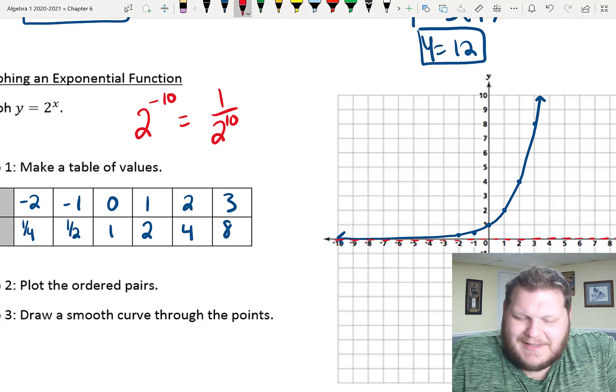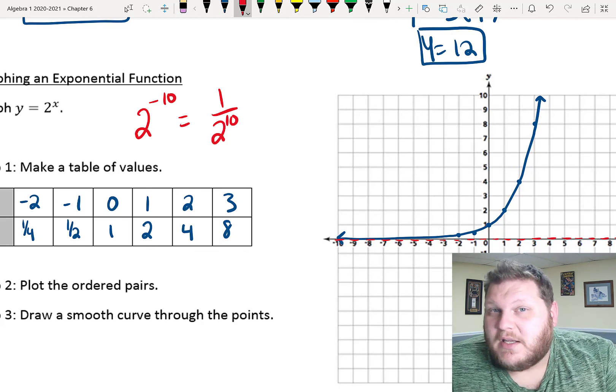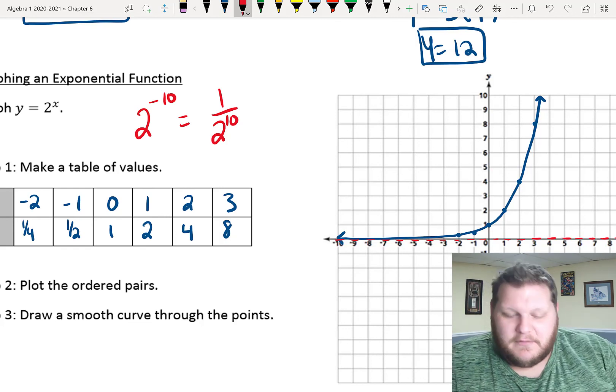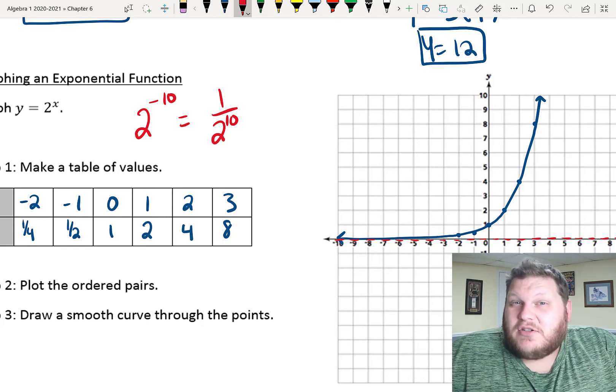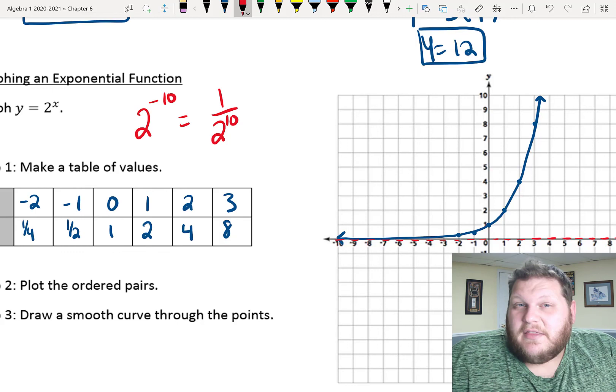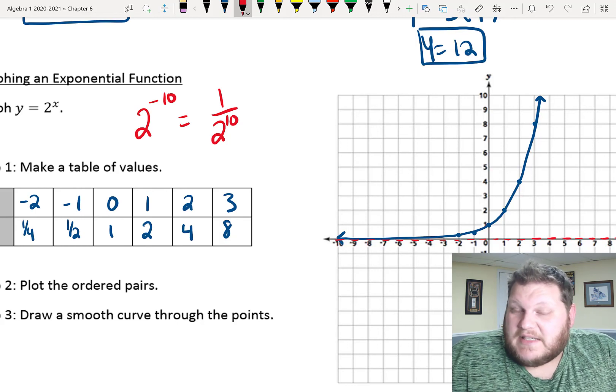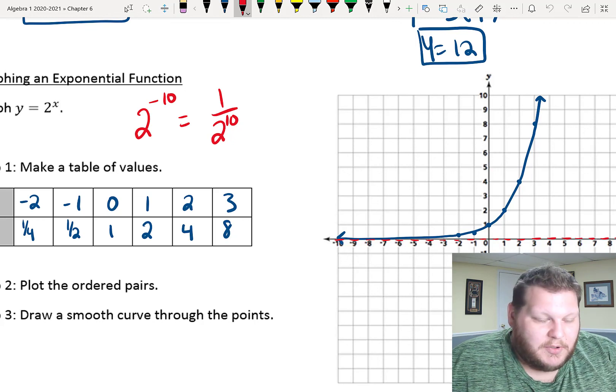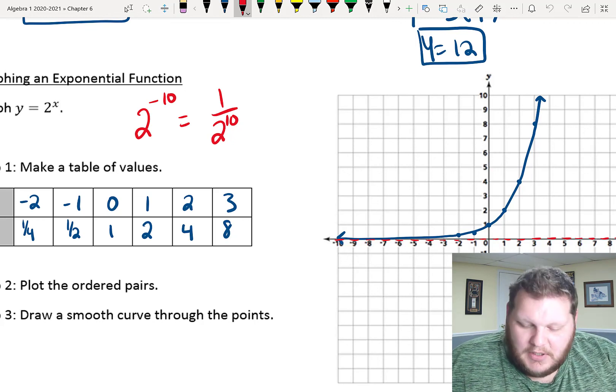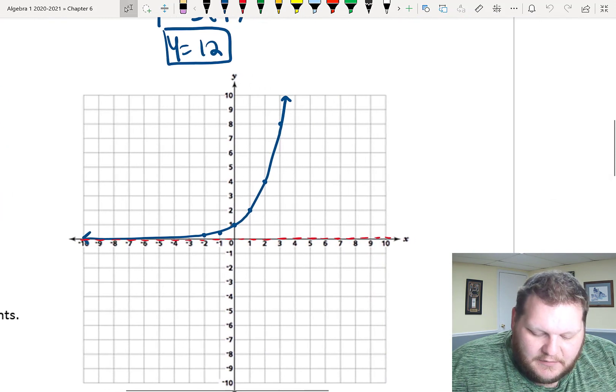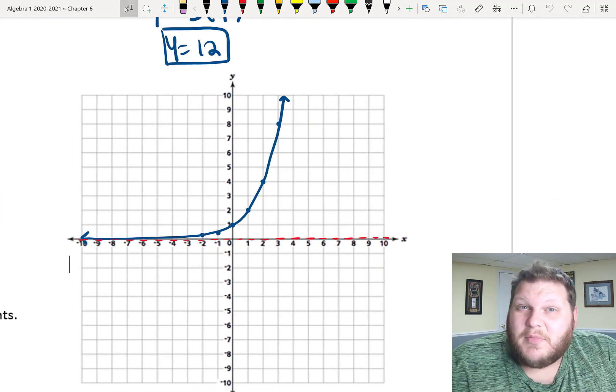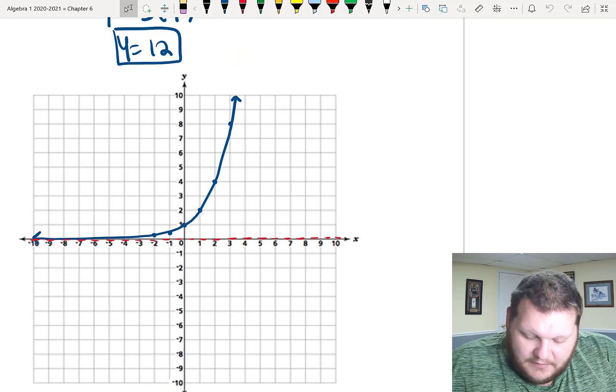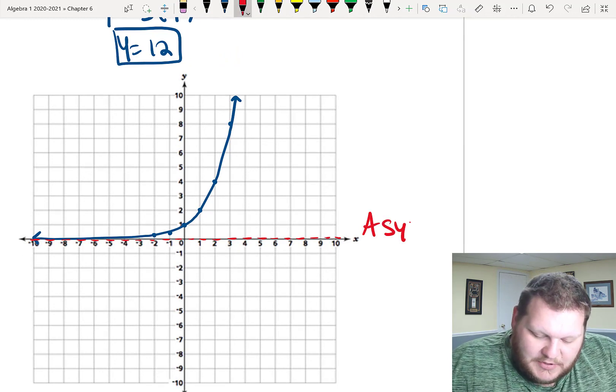But if you notice, it's not 0. No matter what number I plug in here, the giantest, biggest negative number that I can think of, I'm never going to actually hit 0, because nothing, like 2 to some power is never going to give me 0. It's never going to give me nothing. It's either going to be 1 or a really, really small number, but never actually 0. So, this idea of getting really, really close to 0, but never actually hitting it, we have this line that all of my exponentials have. It's called an asymptote.